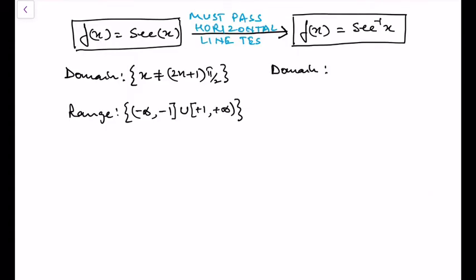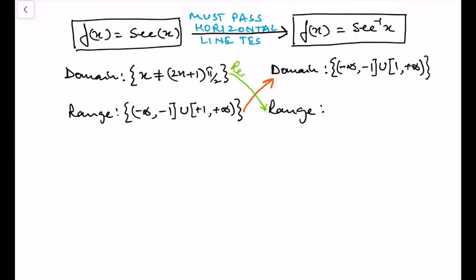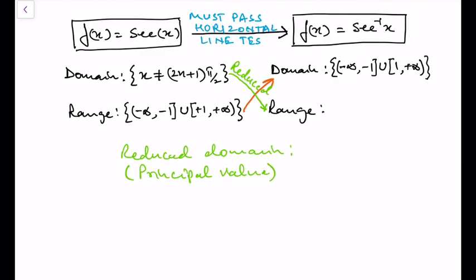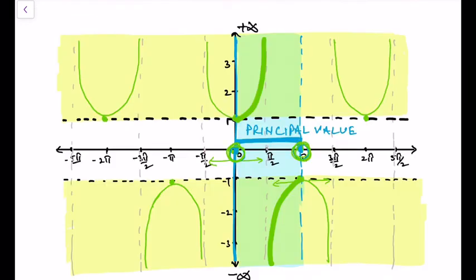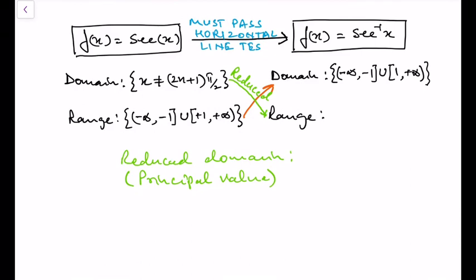The domain for sec inverse x will be the range of sec x, that is minus infinity to −1 and then +1 to plus infinity. The range of sec inverse x will be the reduced domain of sec x — the principal value — which is from 0 to π where π/2 is excluded because at π/2 the function is not defined and we have an asymptote there.